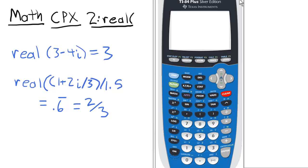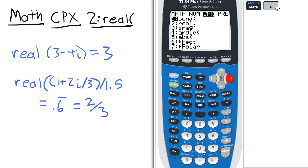So to find the real portion of a complex number, we access the math menu, scroll over to complex, and select option 2 for real.